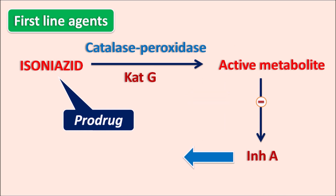The InhA enzyme plays an important role in mycolic acid synthesis within the mycobacteria. Mycolic acid is important for the mycobacterial cell membrane. Isoniazid inhibits InhA enzymatic activity, thereby inhibiting mycolic acid synthesis within the mycobacteria. In this way, isoniazid can produce both bacteriostatic as well as bactericidal action.